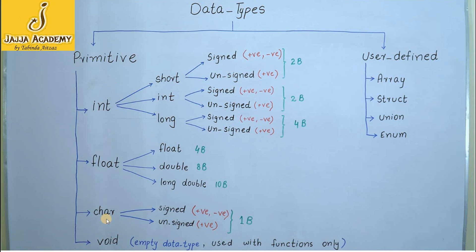The next data type is character data type. The keyword used to represent it is char. The char data type is further divided into signed character and unsigned character. One thing to note is that float data type does not support the signed or unsigned keywords. If signed or unsigned is not mentioned, it is understood that the data type is signed and supports both positive and negative values.